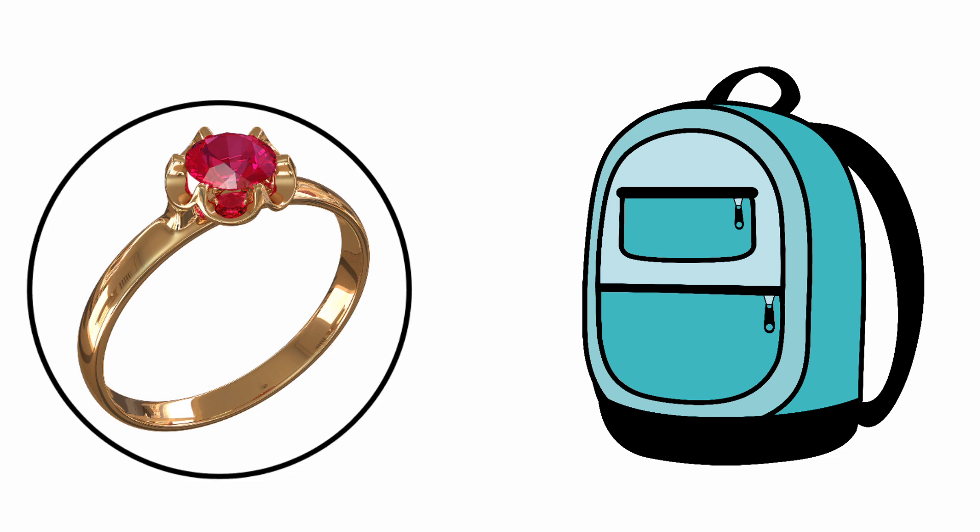Next one, Bag. The beginning sound of the picture Bag is B, and the sound of the letter R is R. The sound of the letter R and the beginning sound of the picture Bag are different. So we should not circle the picture Bag.